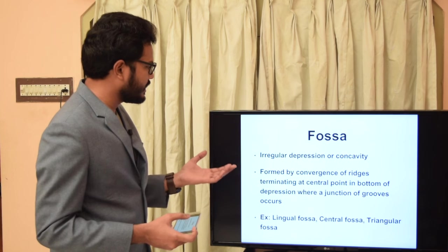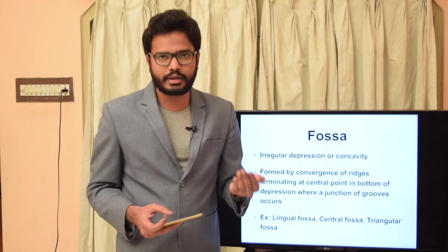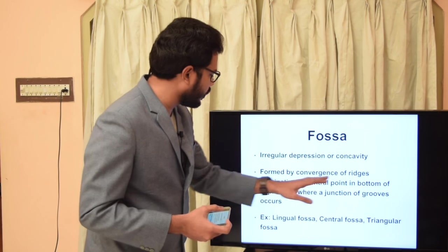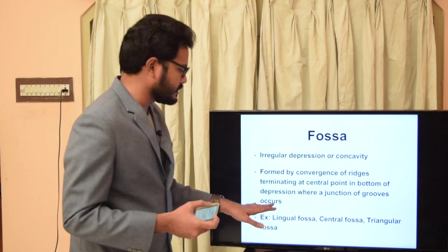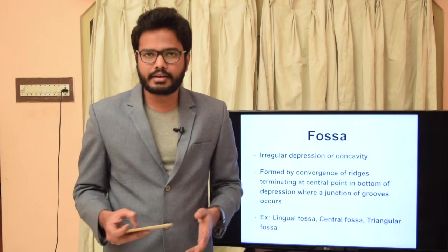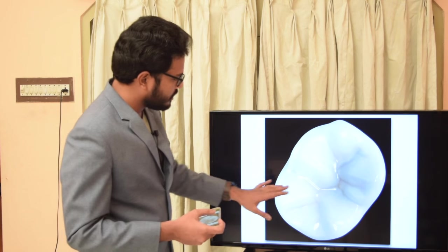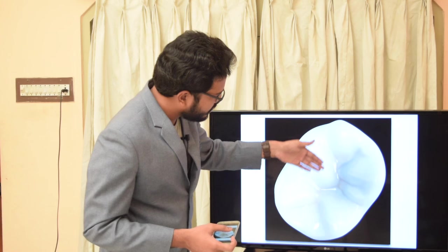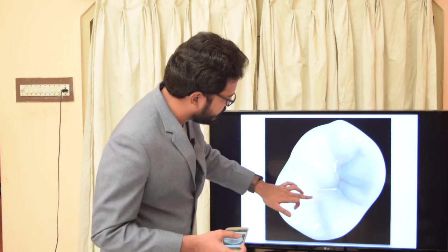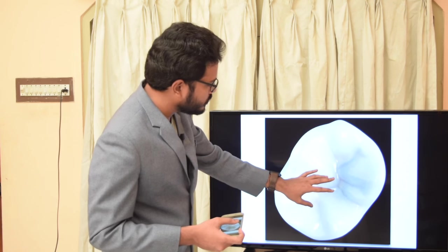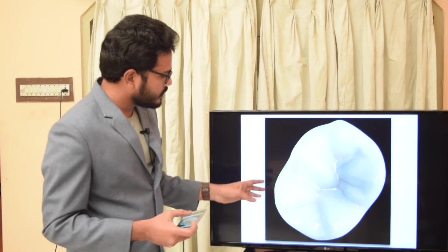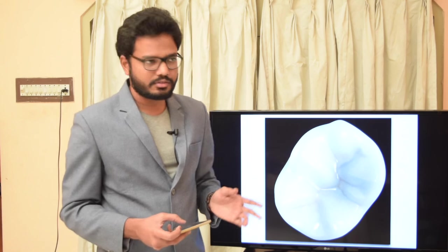A fossa is an irregular depression or concavity formed by convergence of ridges terminating at a central point where a junction of grooves occurs. We have different fossae: lingual fossa, central fossa, mesial and distal triangular fossa. These ridges converging toward the center lead to formation of depressions either in the center or on the mesial and distal aspects of the tooth, and these fossae usually contain various developmental grooves.